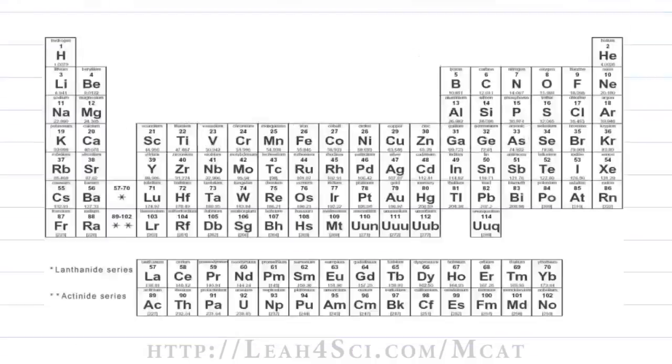We'll use the formula 2N² to find out the maximum number of electrons that you can have within a given principle energy level. For example, when N is equal to 1, we have 2 times 1 squared, 1 squared is 1 times 2 is 2. That means we have a maximum of 2 electrons.